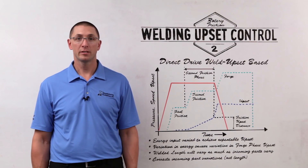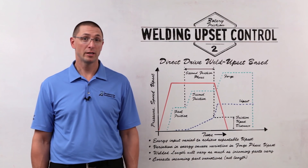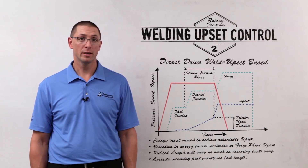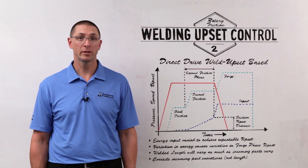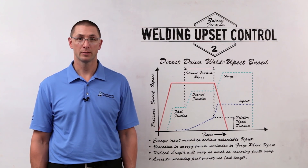Thank you for joining us for this episode of MTI's Whiteboard Wednesdays. I'm Dan Adams. Today we're talking about upset control for rotary friction welding, part two.